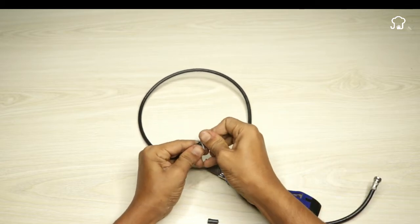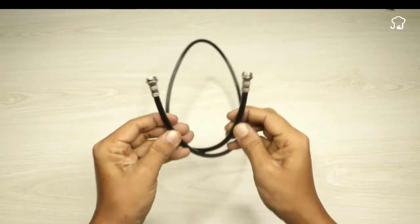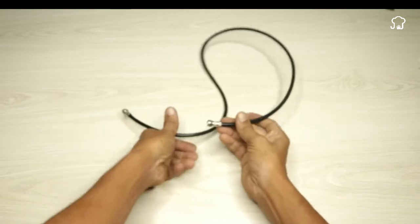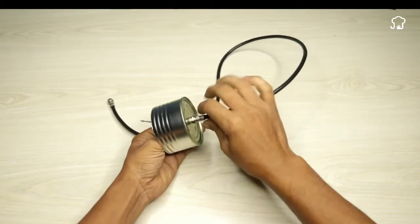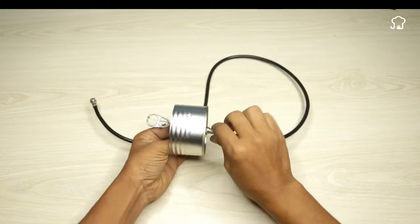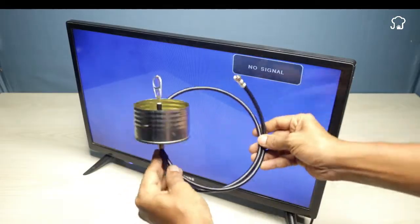We will insert two screws into the feeder. One will be placed in the feeder itself, and the other will be connected to the television. This step is essential to ensure signal transmission from the antenna to the television.